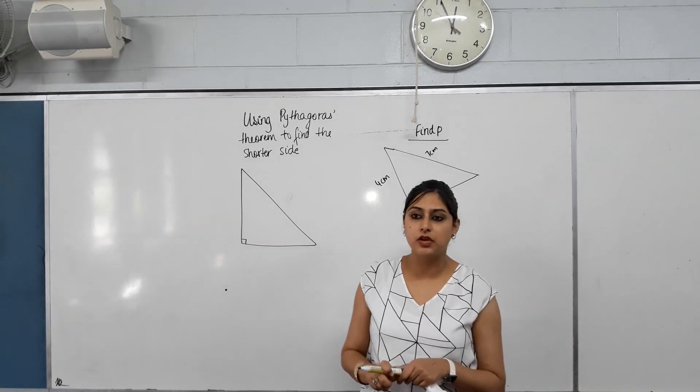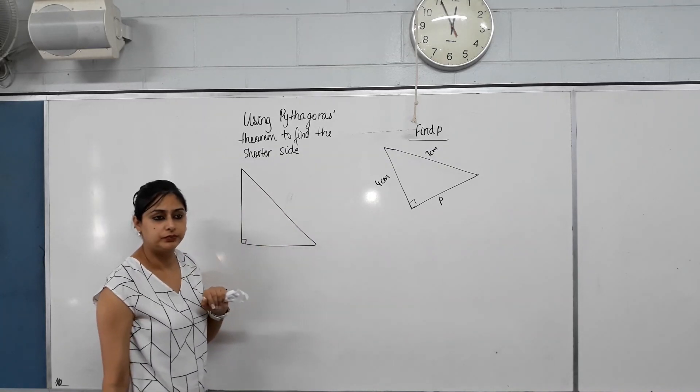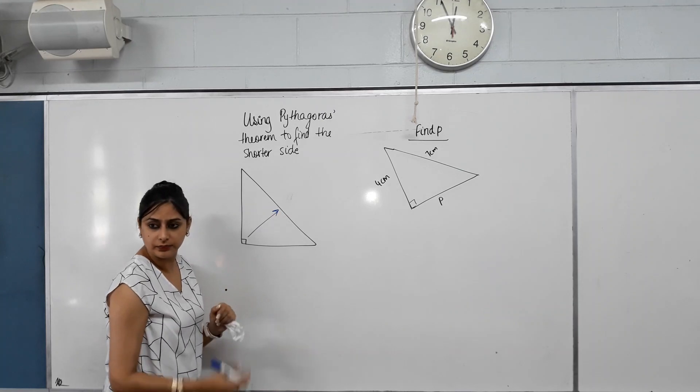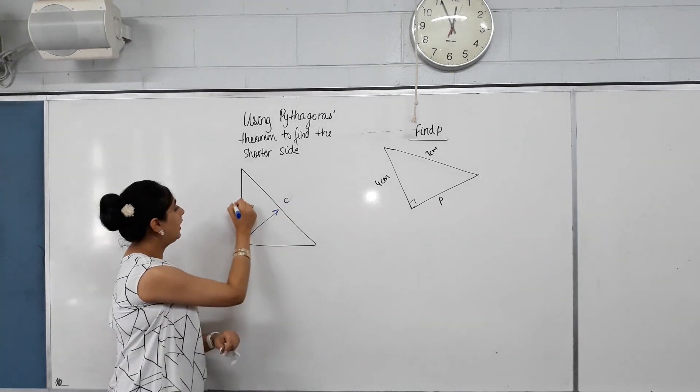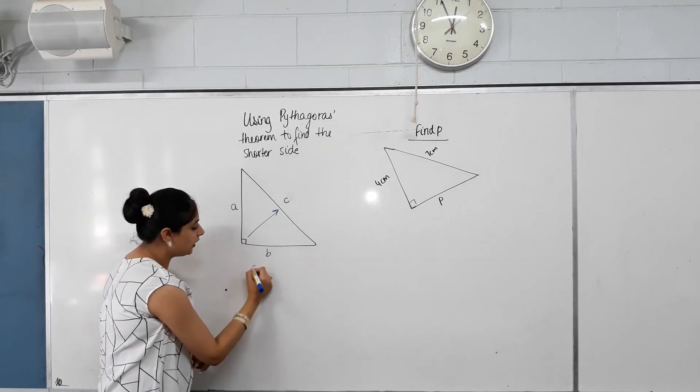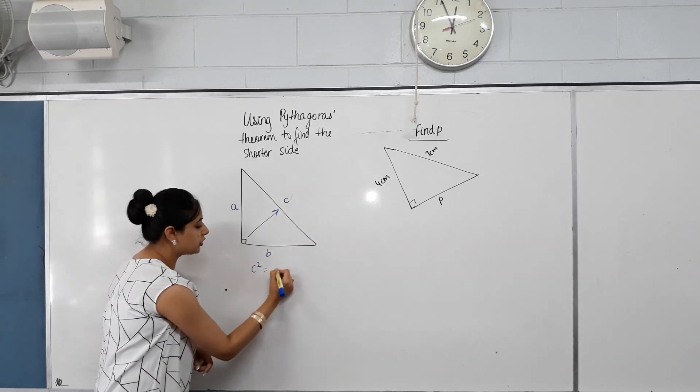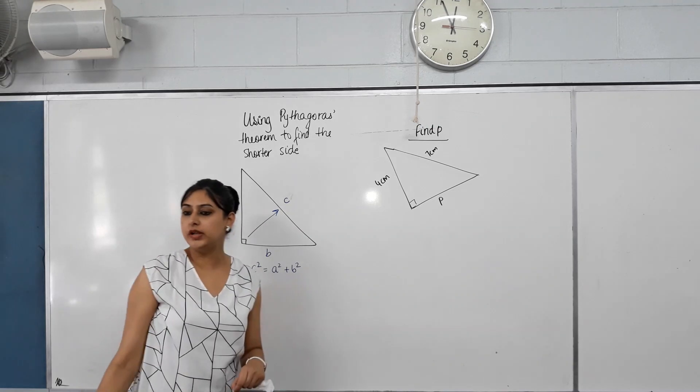So let's start with Pythagoras' theorem. Which side do we label first? Hypotenuse. So isn't that the side opposite to the 90-degree angle? Yes. And we label that as? C. And the other two are? A and B. So what was the relationship that Pythagoras came up with? That C squared is equal to? A squared plus B squared. Thank you. Well done.